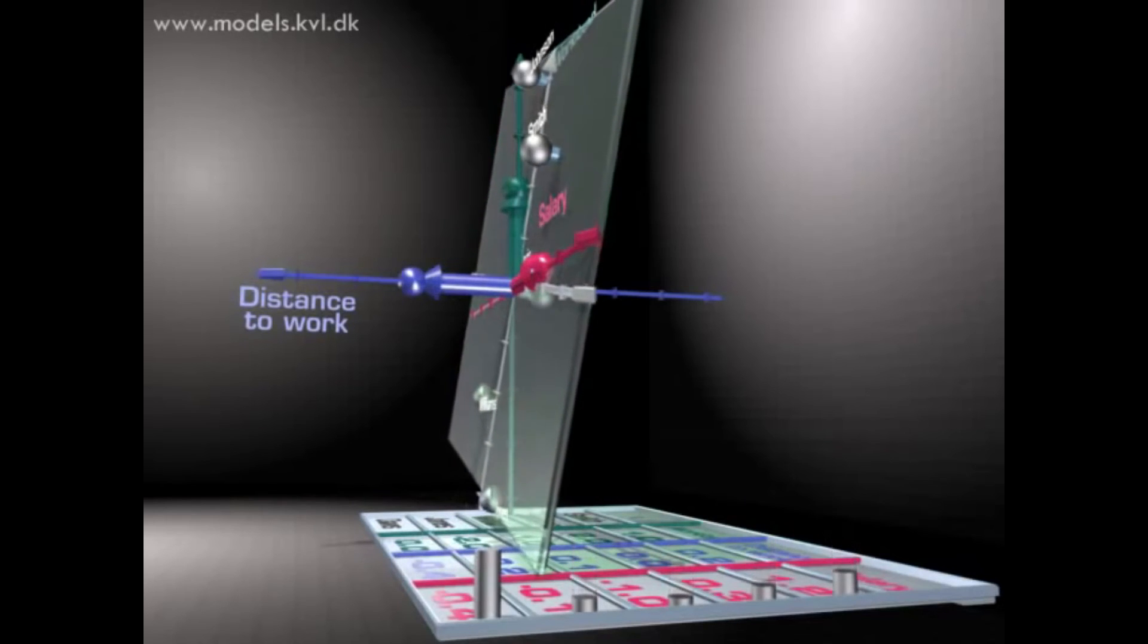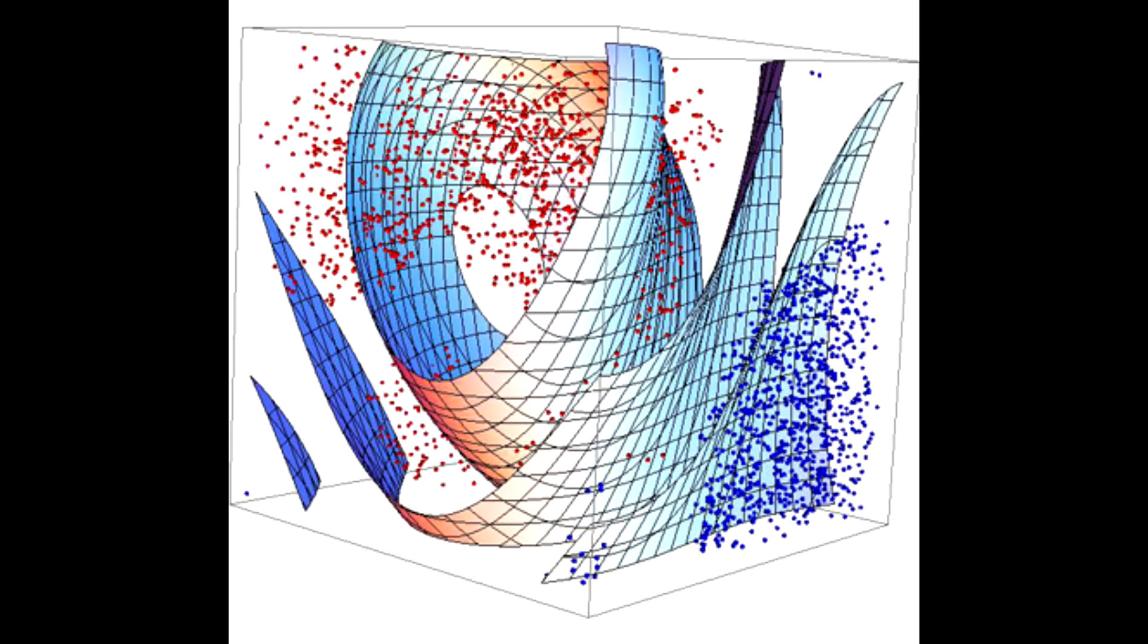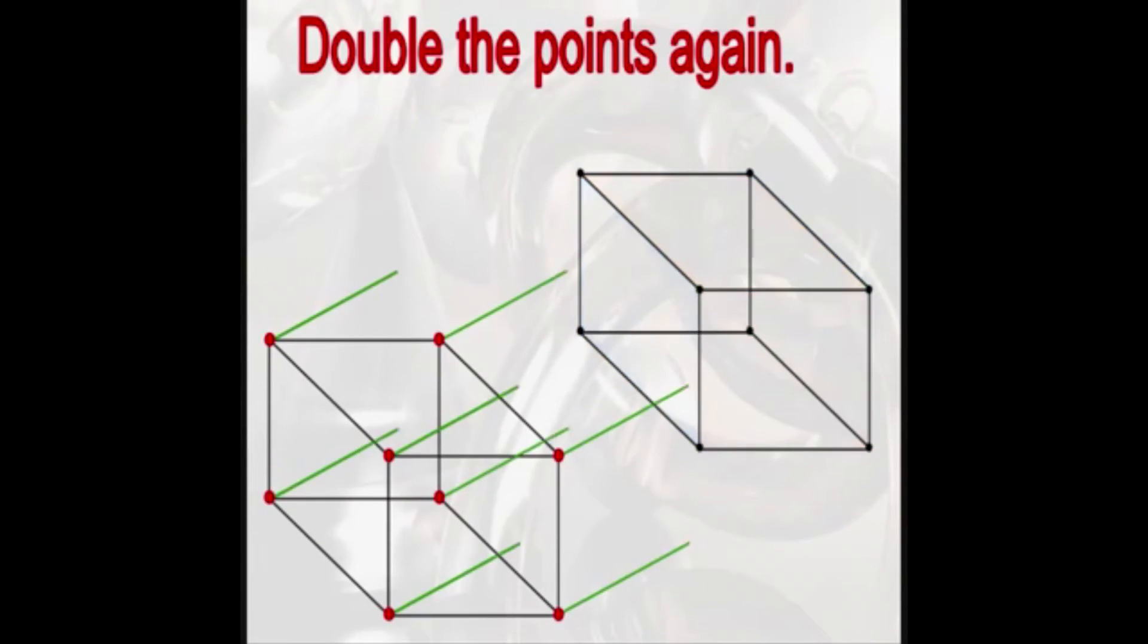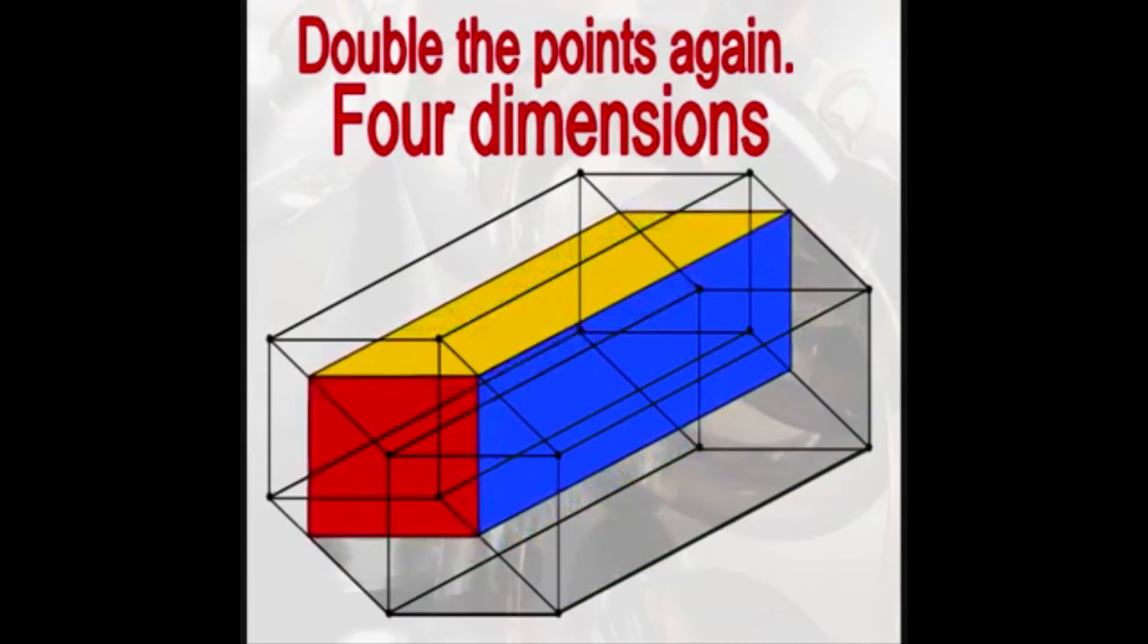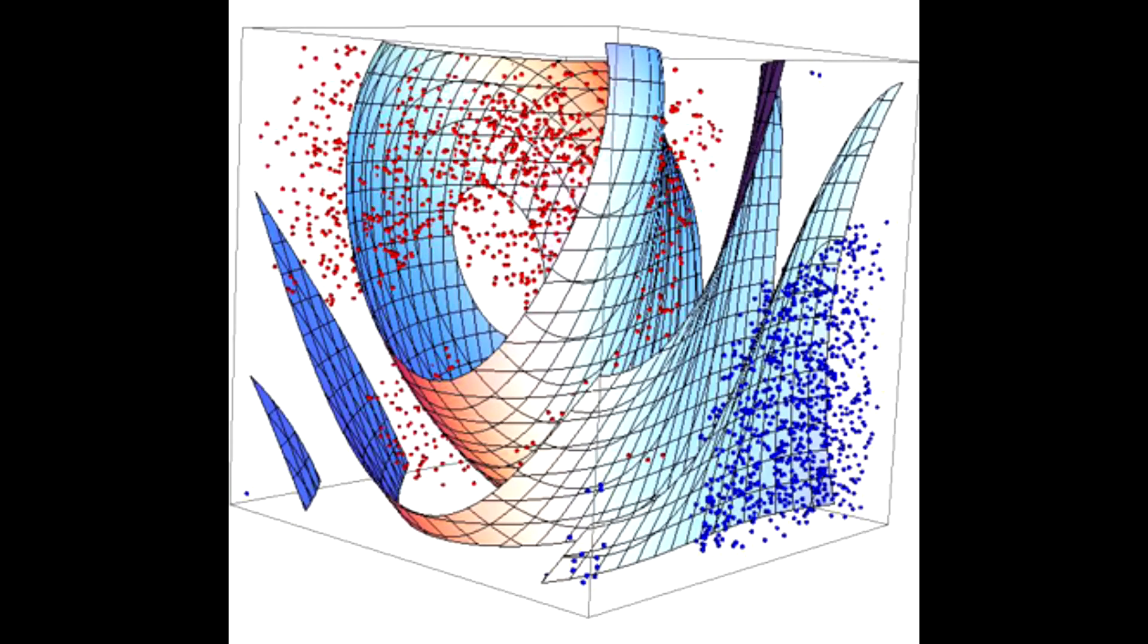Let's consider the visualization process. If the data lies in a 100-dimensional space, we cannot get an intuitive feel for what the data looks like. We can barely manage to imagine the fourth dimension, let alone visualizing the 100th. However, if a meaningful two or three-dimensional representation of the data can be found, then it is possible to visualize it. This may seem like a trivial point, but many statistical and machine learning algorithms have very poor optimality guarantees, so the ability to actually see the data and output of an algorithm is of great practical interest.